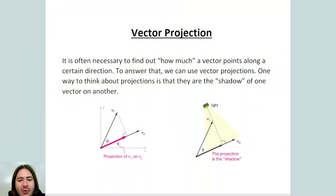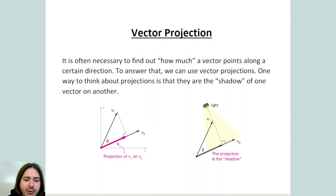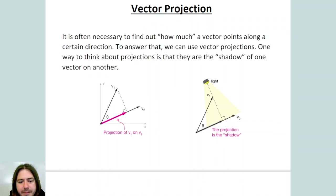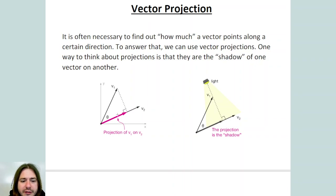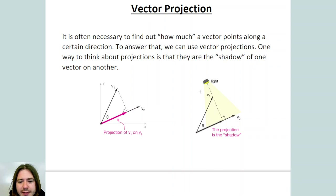Welcome back. Today wraps up our unit on vectors and we're going to be talking about projections. We talked about this briefly in our last lesson within the context of finding a dot product. To find a dot product you needed to multiply the magnitude of one vector by the shadow of the second vector on the first. That shadow has a name — it's called a projection. Projections are used in lots of different applications, particularly for finding the work done on an object in physics.